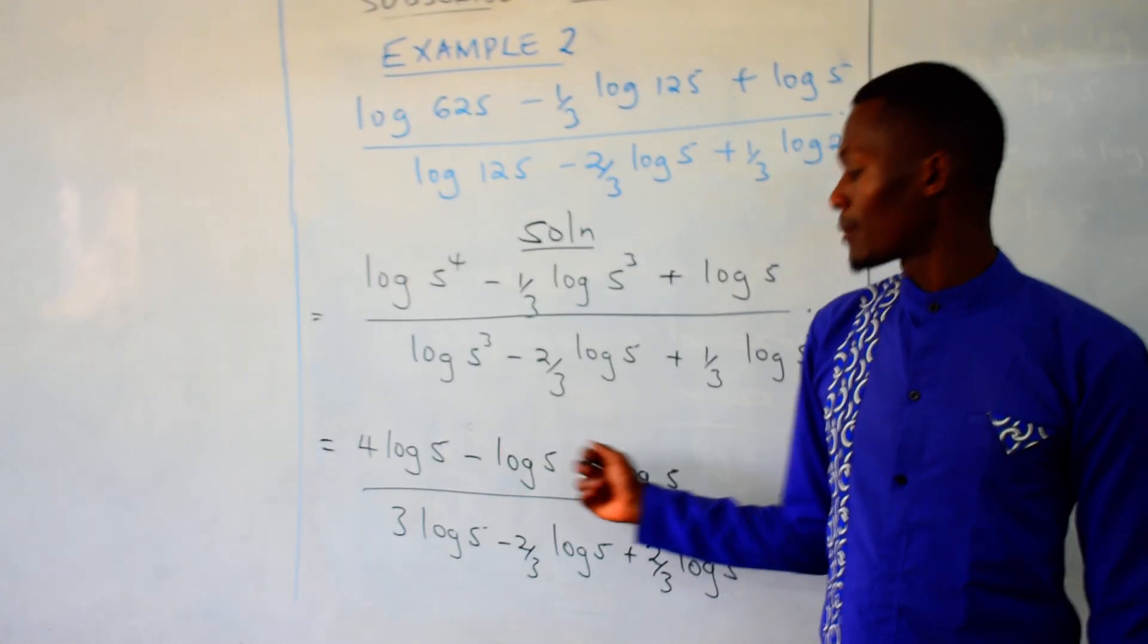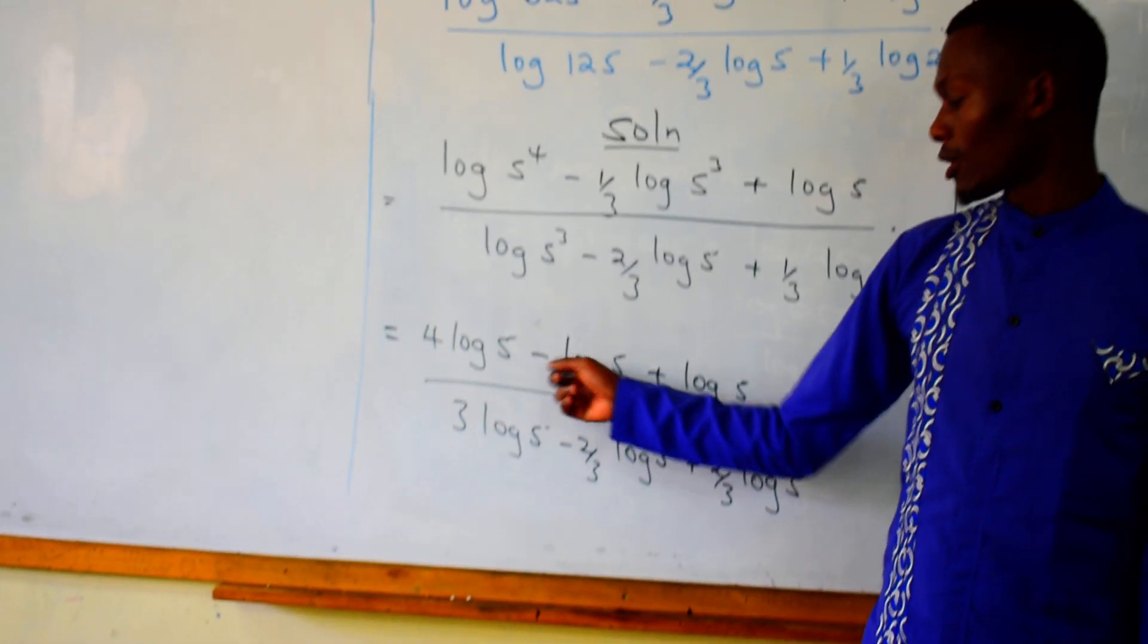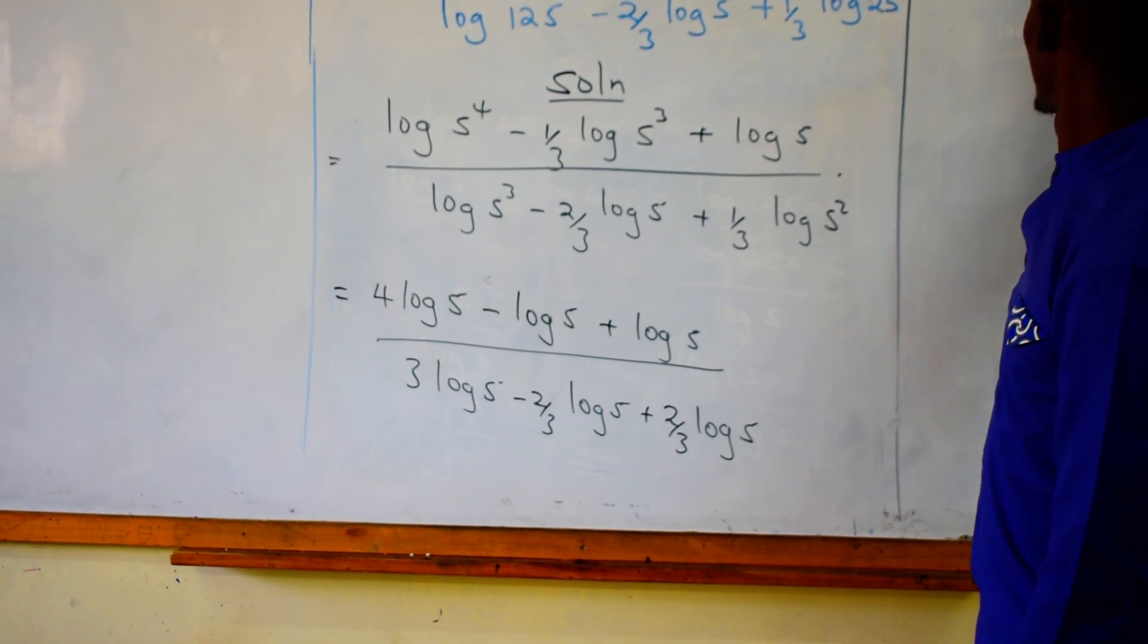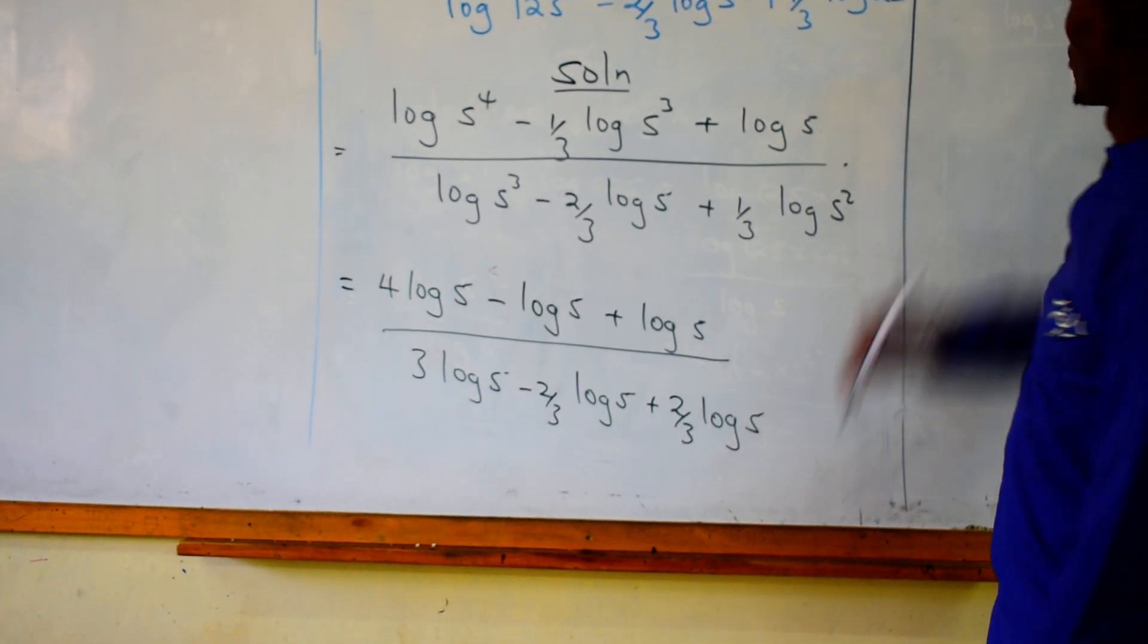So it is 4 minus 1 plus 1. So minus 1 plus 1, first of all, becomes a 0. So in the numerator, we remain with 4 log of 5.